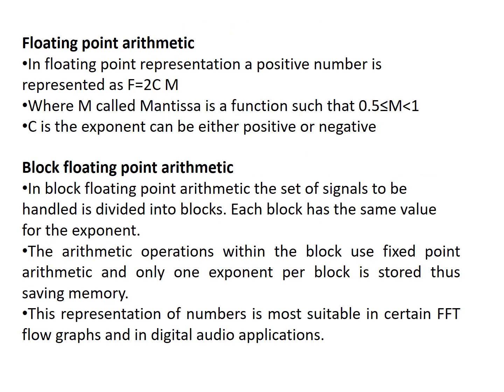Floating point arithmetic. In floating point representation, a positive number is represented by F equals 2^C times M, where M is called the mantissa and satisfies 0.5 less than or equal to M less than or equal to 1. C is the exponent, which can be either positive or negative.